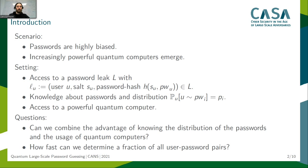We then tried to answer the following two questions: Can we combine the advantage of the knowledge about the password distribution with the usage of a quantum computer? And if so, how fast can we determine a certain fraction of all user-password pairs?